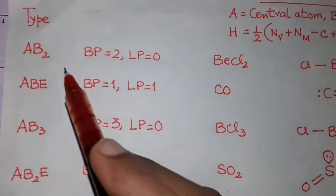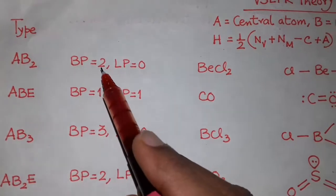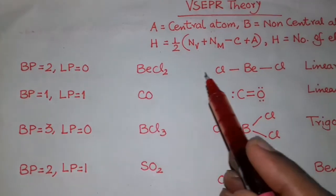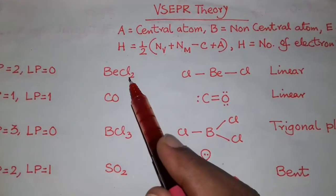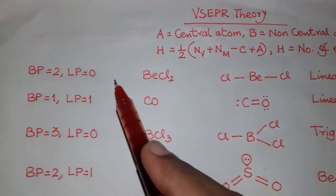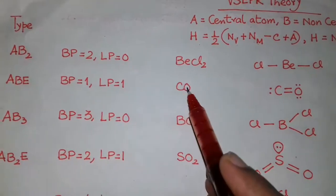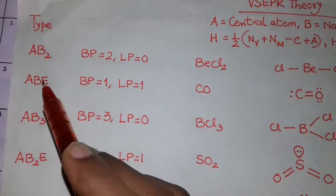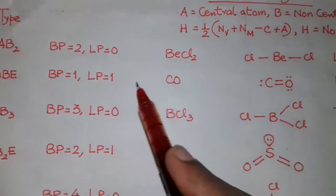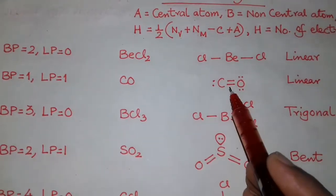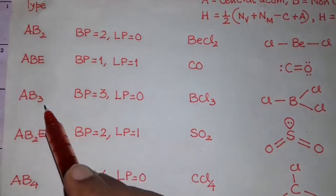Starting with AB2 type, H equals 2. When bond pair equals 2 and lone pair equals 0, the type is linear — for example, BeCl2. H equals 2 with no lone pair, so type is AB2 and shape is linear. Next, for carbon monoxide (CO), H equals 2 and type is ABE: A is the central atom (carbon), B is oxygen, and E is one lone pair on carbon. It is also linear in shape with a lone pair on carbon.